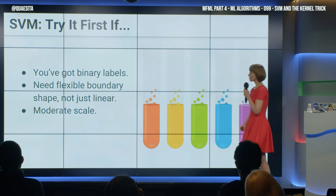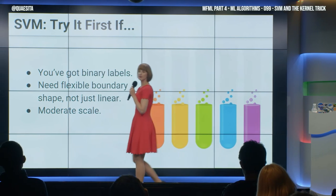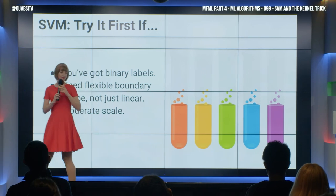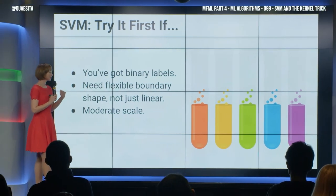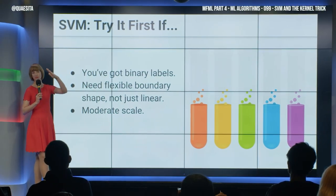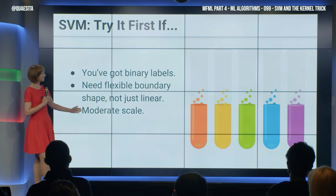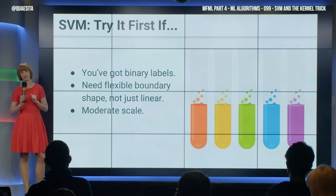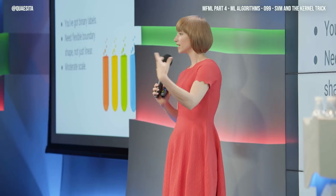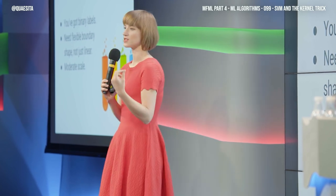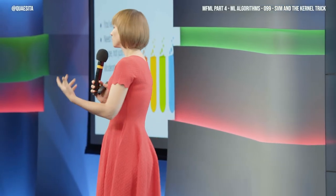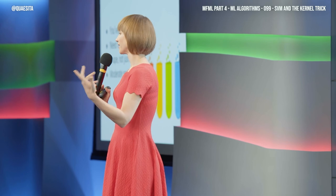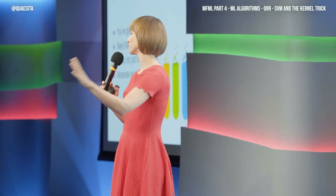So when are you going to try this thing? If you've got binary labels, if you want a flexible boundary shape — not just linear — this is a solution that lends itself best to moderate scale. If you're working with really large scale, there's another method we'll look at later: logistic regression, where at Google we have done more engineering effort to make that one scale-friendly. So you'll prefer logistic regression at larger scale.